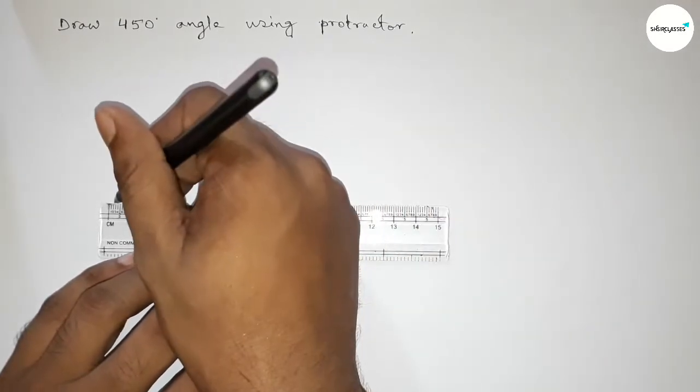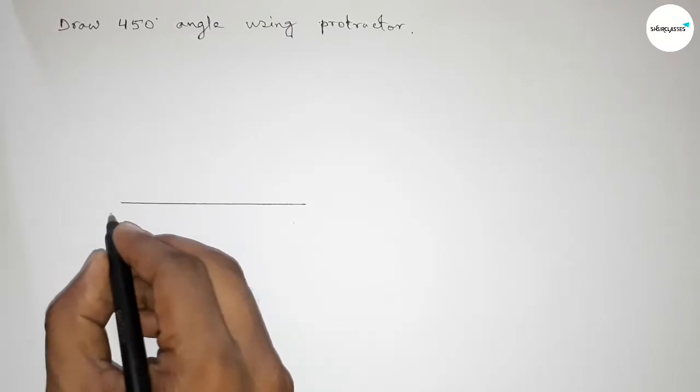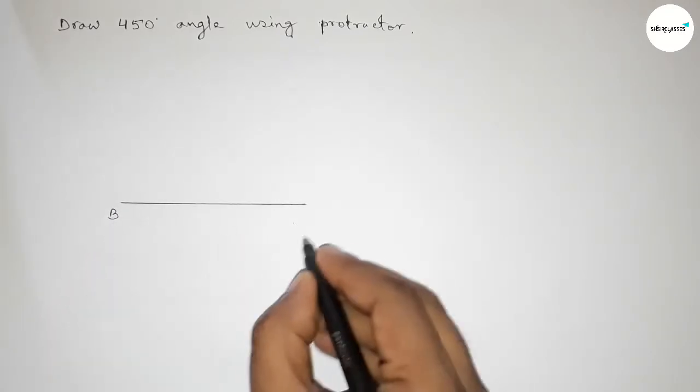First drawing here a line and taking here a point. So taking here point B and here C.